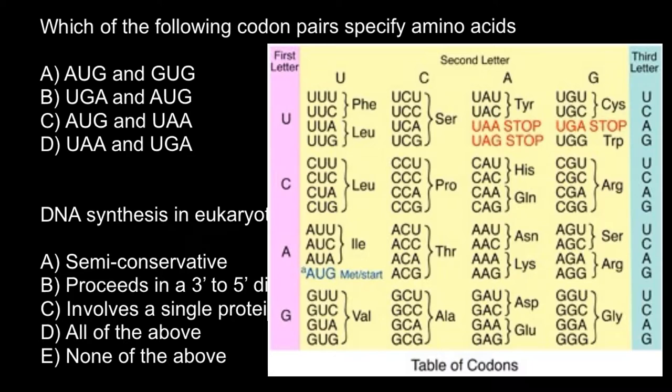And let's check the rest. UGA, I know this is stop codon, and AUG, this is going to be start codon. So this is not two amino acids, only one amino acid here.